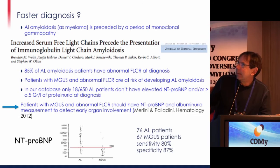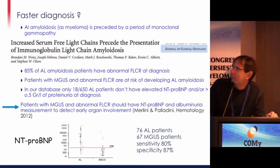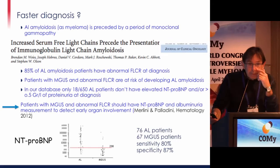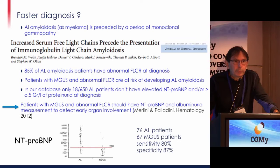AL amyloidosis, like myeloma, is preceded by a period of monoclonal gammopathy. As described in the literature, 85 percent of AL amyloidosis patients have an abnormal free light chain ratio at diagnosis, so patients with MGUS and an abnormal free light chain ratio are at risk of developing AL amyloidosis. In our database, only 18 patients among 650 AL patients had neither elevated NT-proBNP nor proteinuria.